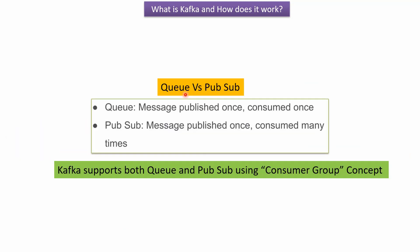Here we will see what is Queue and what is PubSub. In the case of a Queue, a message is published once and consumed once. In the case of PubSub, a message is published once and consumed many times. Kafka supports both Queue and PubSub using the consumer group concept.